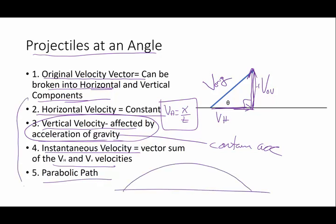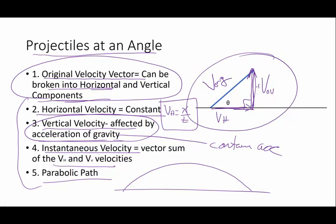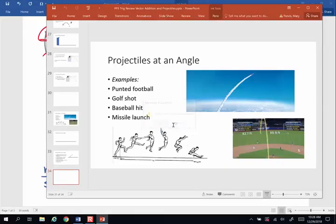And instantaneous velocity is going to be the vector sum of the vertical and horizontal anywhere along that parabolic path. So most everything is the same as in horizontal projectiles. The only thing that's a little bit different is this step, where we break them into components. All right, that will do for this time, and then we'll go through an example. See you then. Bye-bye.